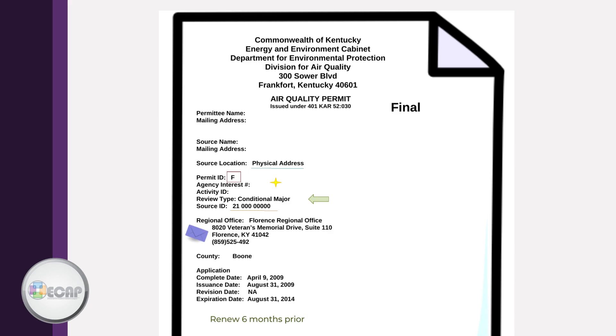The issuance date and expiration date are also on the cover page. All facilities must submit a permit renewal six months prior to the expiration date. Be sure to mark this on your calendar.